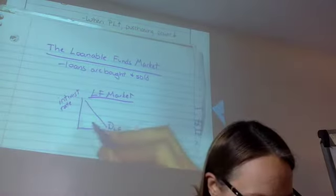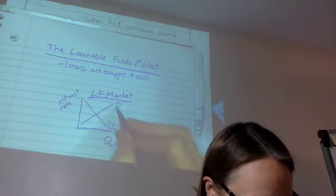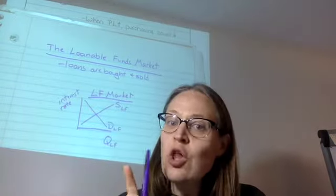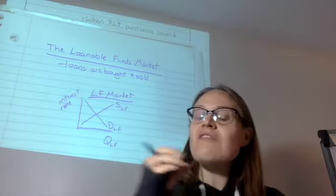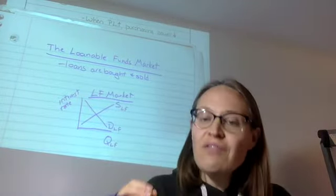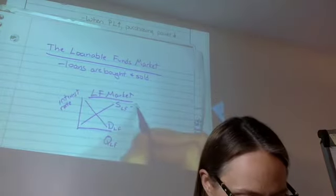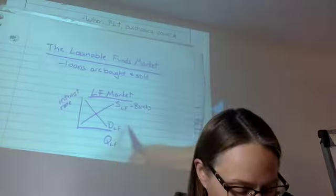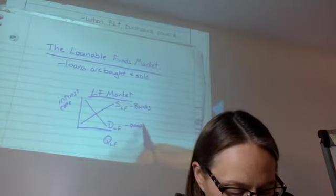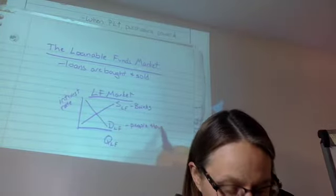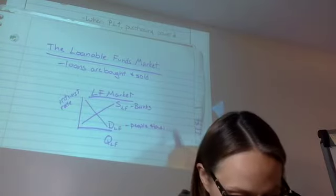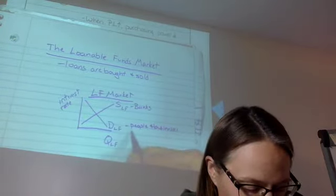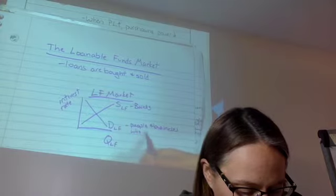We also have the supply of loanable funds. Where do loans come from? Loans come from banks, so the supply of loanable funds comes from banks. The demand for loanable funds comes from people and businesses who want loans, because businesses take out lots of loans.